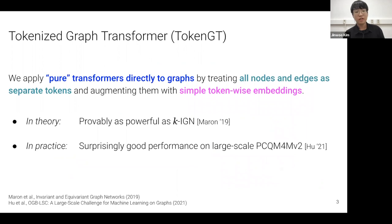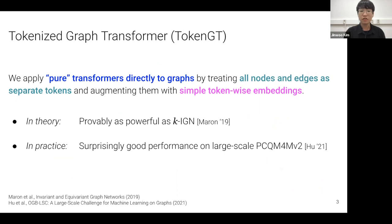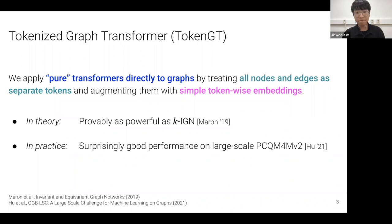We apply pure transformers directly to graphs by treating all nodes and edges as separate tokens and augmenting them with simple token-wise embeddings. In theory we prove this approach is as powerful as k-IGN, and in practice we show it yields surprisingly good performance on large-scale learning on the PCQM4Mv2 dataset.